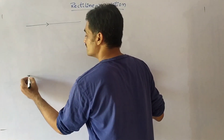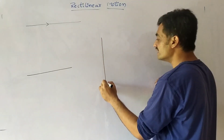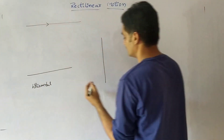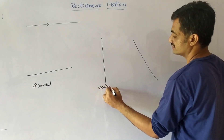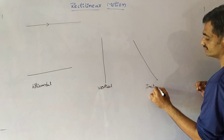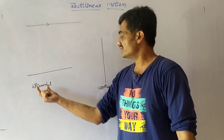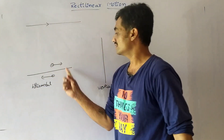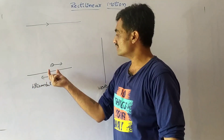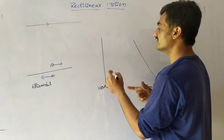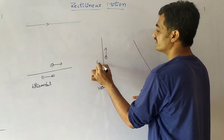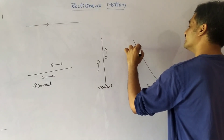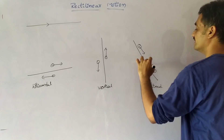The rectilinear motion can be in the form of horizontal, vertical, and inclined form. If we consider that the body is moving in a straight line, the body can move in this direction or in this direction — towards the right or towards the left. In the case of vertical motion, the body can move in the upward or downward direction. Whereas a body can travel down the inclined plane or up the inclined plane.